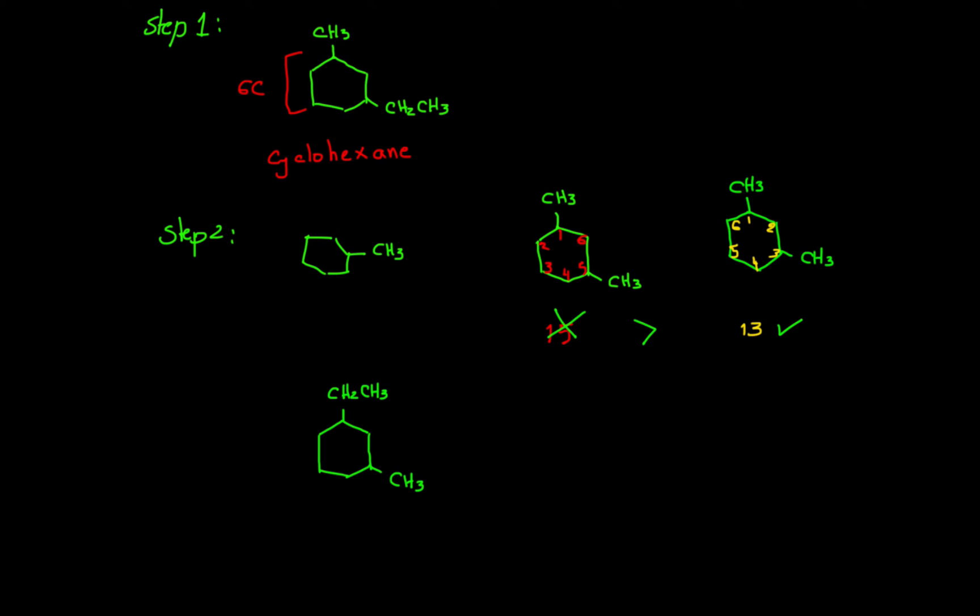So the question is where should I start my numbering - should I start from here one, two, three, four, five and six, or from here one, two, three, four, five and six?